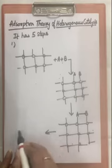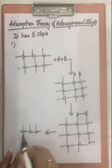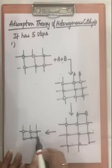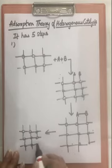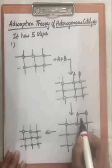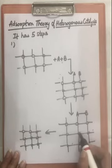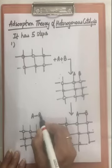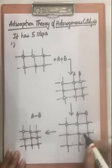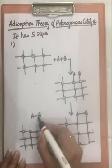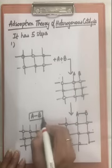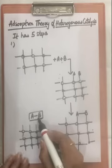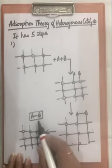Next step: after the reaction between the reactants on the surface of the adsorbent, these reactants — which have now changed to products on the surface of the catalyst — will start separating out from the catalyst. Hence, a product is formed. This separation of the product from the catalyst is called desorption.